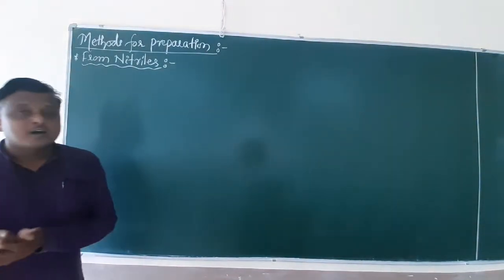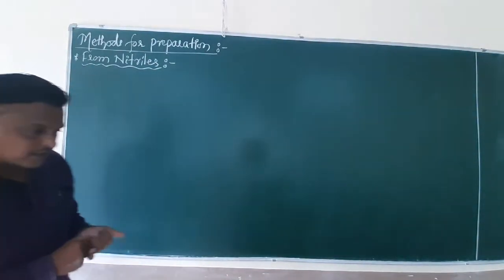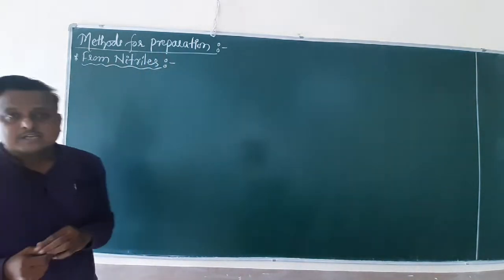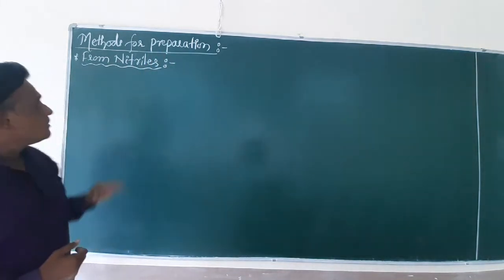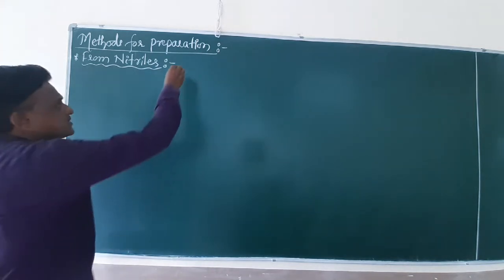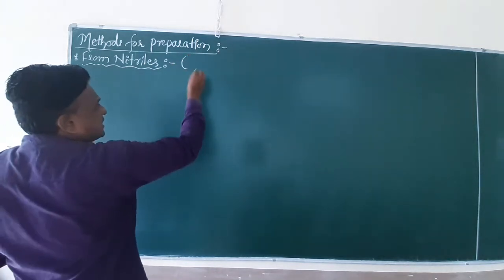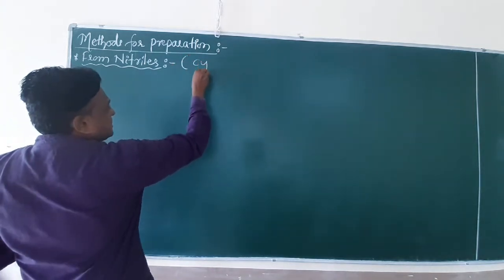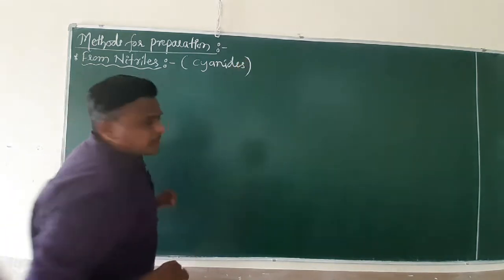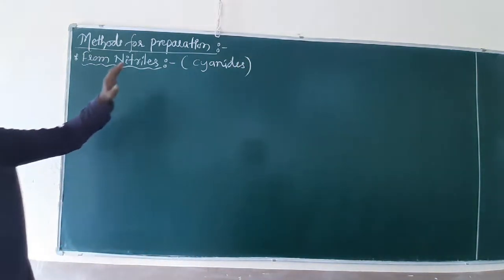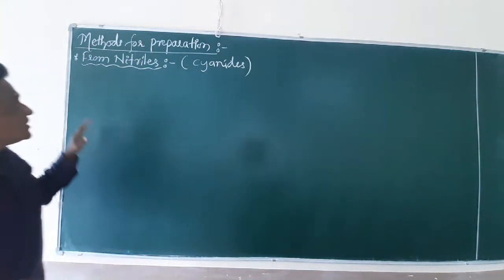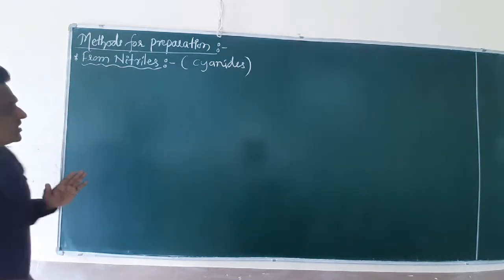Welcome everyone. Now we want the next method of preparation of carboxylic acids by using nitriles. Nitriles are nothing but cyanides. So how do we prepare carboxylic acid from alkyl cyanides, or alkyl nitriles?